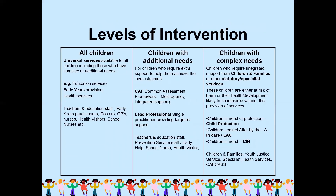What are the levels of intervention? There are three categories: all children, children with additional needs, and children with complex needs. Universal services are available to all children, including those with complex or additional needs — for example, education services, early years provision, and health services. For children with additional needs — those who require extra support to achieve the five outcomes — there is the Common Assessment Framework (CAF), multi-agency integrated support, a lead professional providing targeted support, and involvement of school nurses and health visitors.